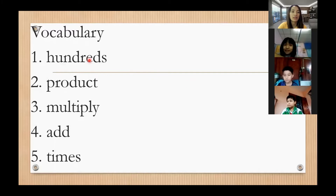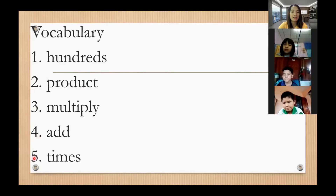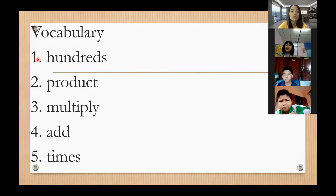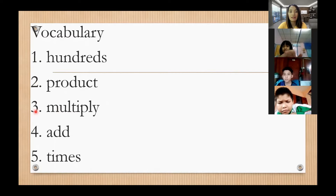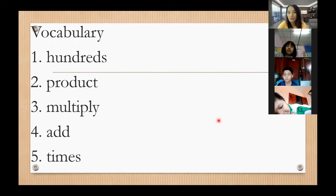Number one: hundreds. Number two: product. Number three: multiply. Number four: add. Number five: times. I'll read one more time. Number one: hundreds. Number two: product. Number three: multiply. Number five: times. So the first student to read will be called.